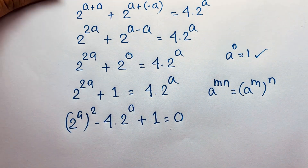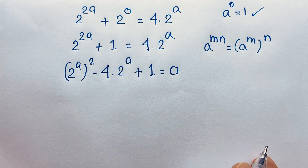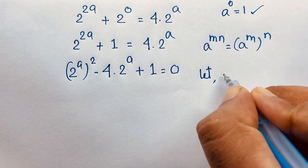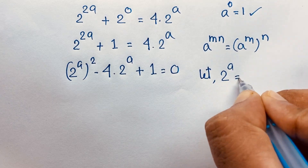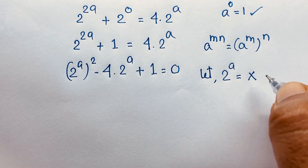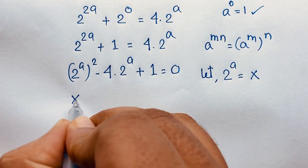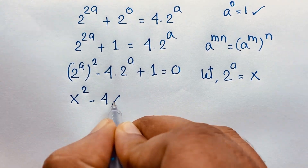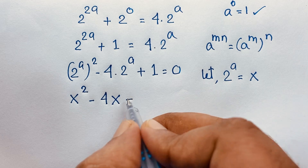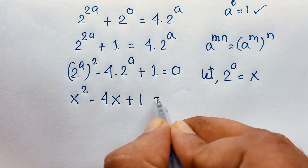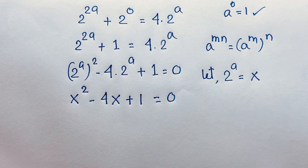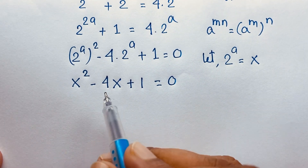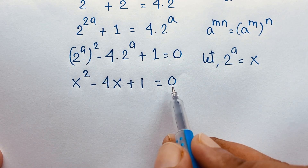At this moment, let 2 to the power a equal x. So it will be x squared minus 4x plus 1 equal to 0.